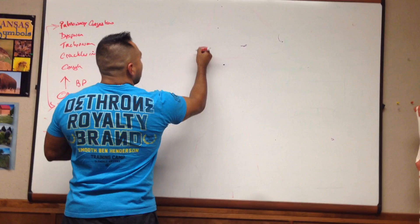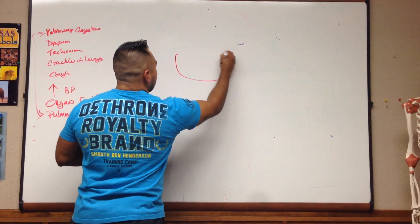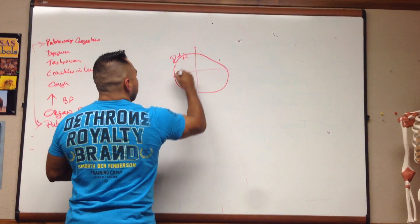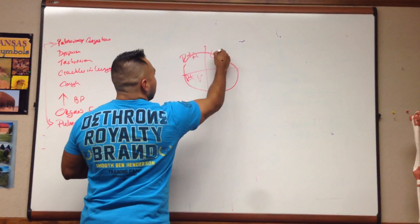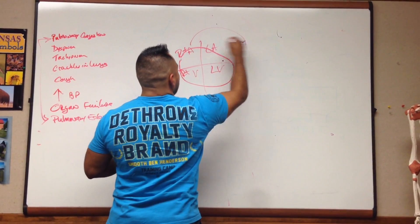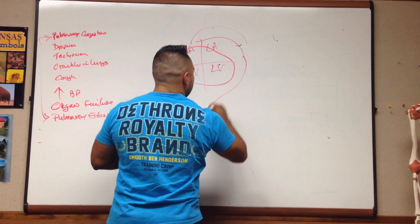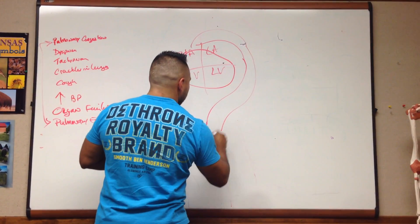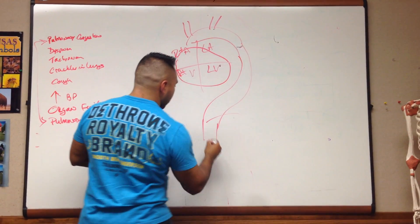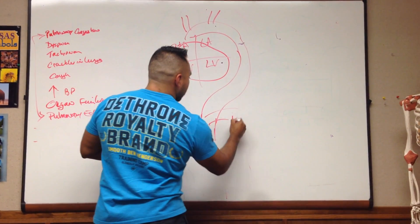So again, let's just draw a little picture here of the heart. So, right atrium, right ventricle, left atrium, left ventricle, and now here we're going to pretend that this is our aortic arch. This is going to become the aorta, and of course we're missing a lot of stuff, but we don't need to get into all that because this is not that kind of class.